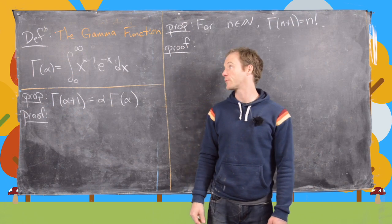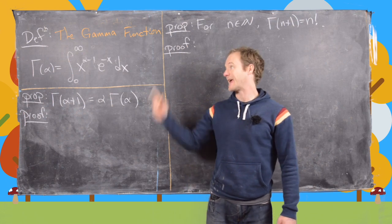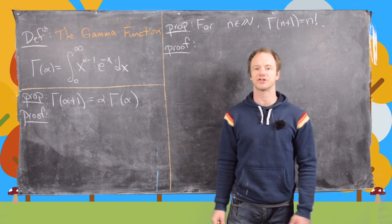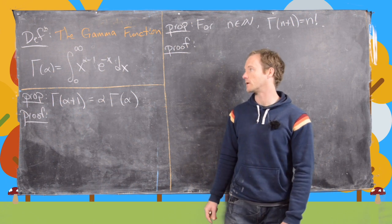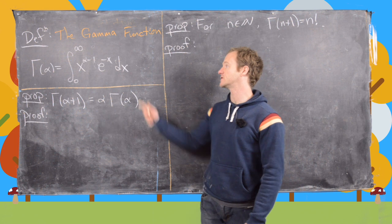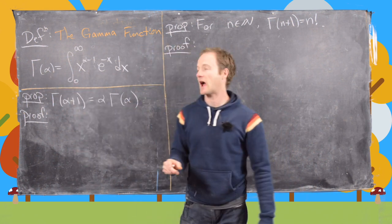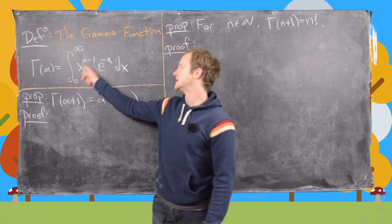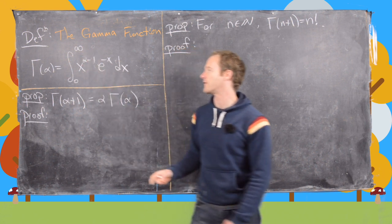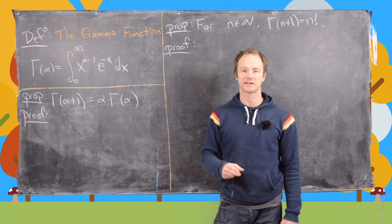In this video we're going to look at a pretty cool function — the gamma function — which turns out to be a generalization of the factorial. The gamma function is defined as follows: Gamma evaluated at alpha is equal to the integral from 0 to infinity of x to the alpha minus 1, times e to the minus x, dx.